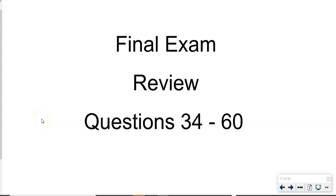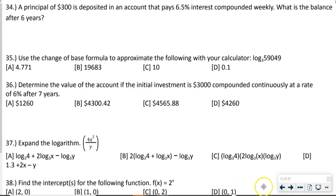Going over the last four pages of the final exam review, questions 34 through 60. Here's number 34: a principal of $300 is deposited in an account that pays 6.5% interest compounded weekly. What is the balance after six years?